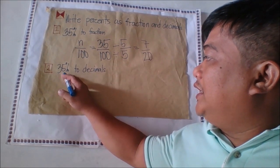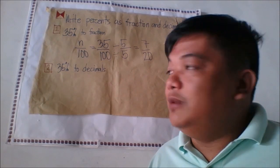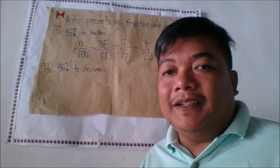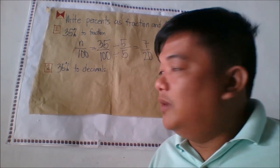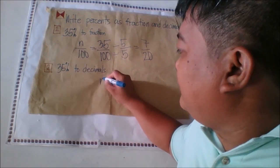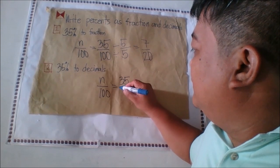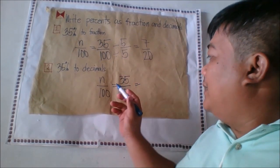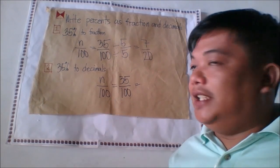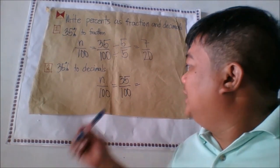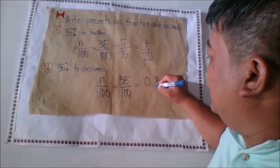Now let's convert 35 percent to a decimal. Divide 35 by 100 using the ratio N/100. Dividing a whole number by 100 is like moving the decimal point two places to the left, so 35 divided by 100 equals 0.35.